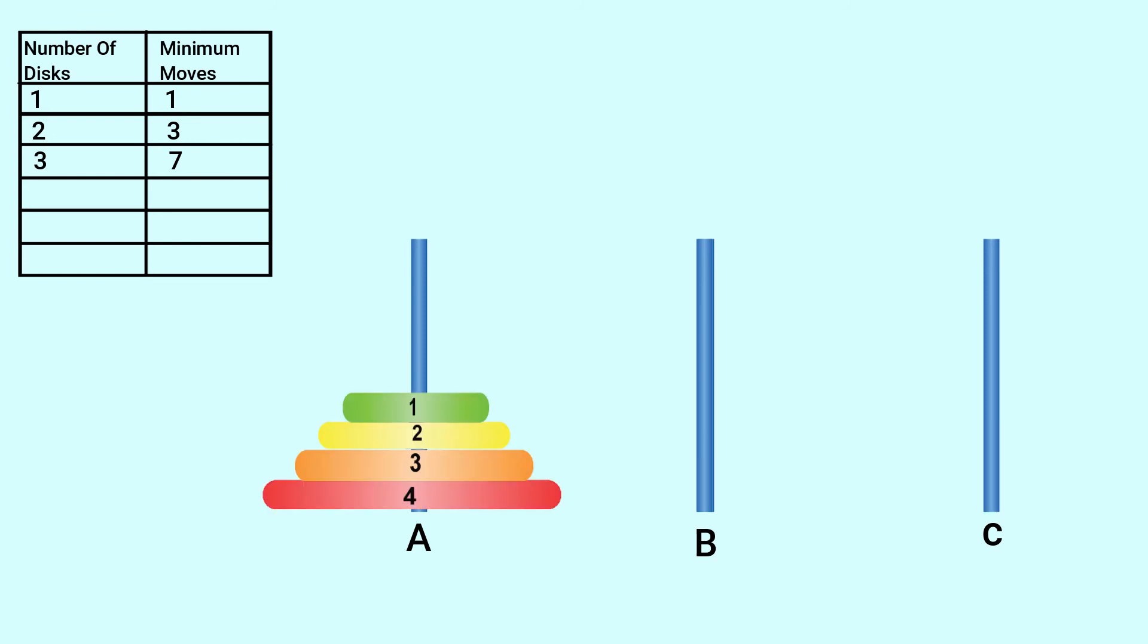Now, let us take four discs. Move disc 1 from A to B. Move disc 2 from A to C. Move disc 1 from B to C. Move disc 3 from A to B. Move disc 1 from C to A. Move disc 2 from C to B. Move disc 1 from A to B. Move disc 4 from A to C. Move disc 1 from B to C. Move disc 2 from B to A. Move disc 1 from C to A. Move disc 3 from B to C. Move disc 1 from A to B. Move disc 2 from A to C. Move disc 1 from B to C. That's how four discs take 15 minimum moves.